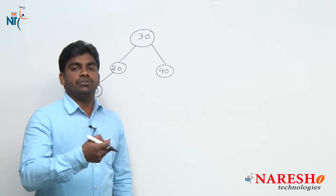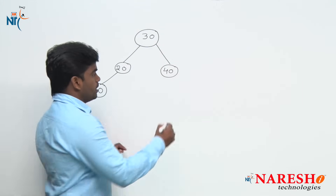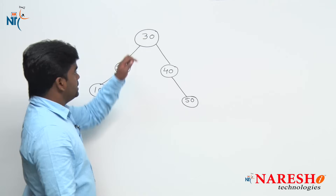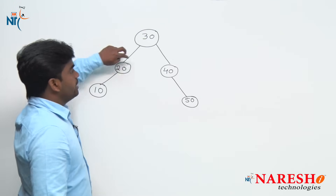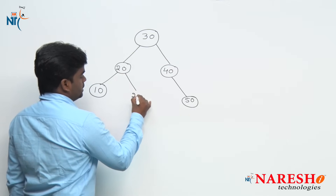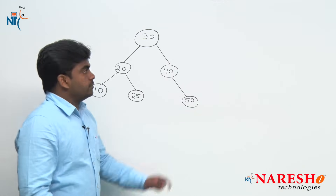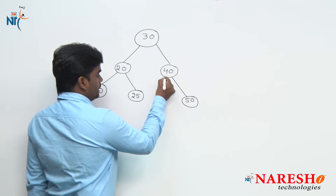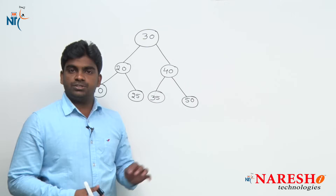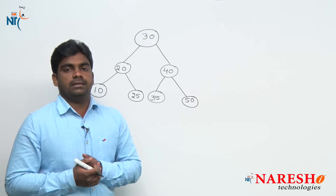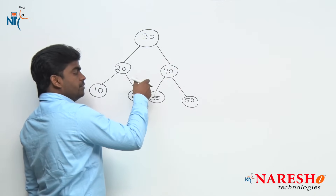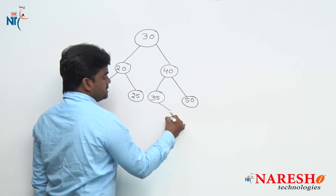Suppose if you want to store 50 — when compared with 30 it is a greater value, so right side. If you want to store 25 — 25 is lesser than 30, connected to left side; then compare with 20 — 25 is greater than 20, so connected to 25 there. Next, suppose 35 — 35 is greater than 30, lesser than 40, so 35 will be connected there. If you want to connect 37 — compared with 30 it is greater, compared with 40 it is lesser, compared with 35 it is greater — so 37 will be connected there. This is the structure.